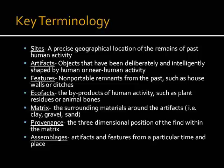The matrix is the surrounding materials around the artifacts — is it clay, gravel, or sand? The surrounding matrix could be indicative of any sort of site disturbance. Archaeologists use strings lined up in a grid format, as you can see in the pictures, to determine the precise location in three dimensions of a particular find within the matrix. Assemblages in archaeology are artifacts and features from a particular time and place.